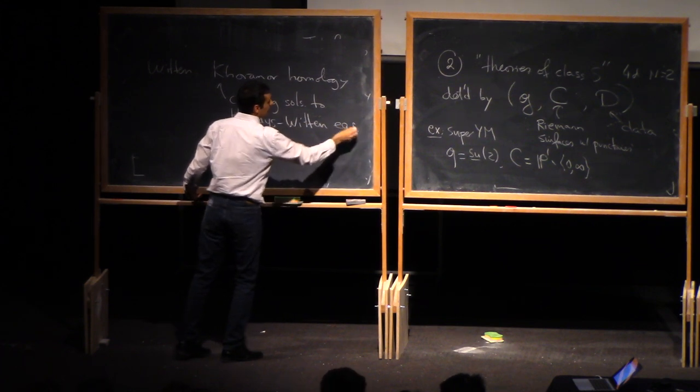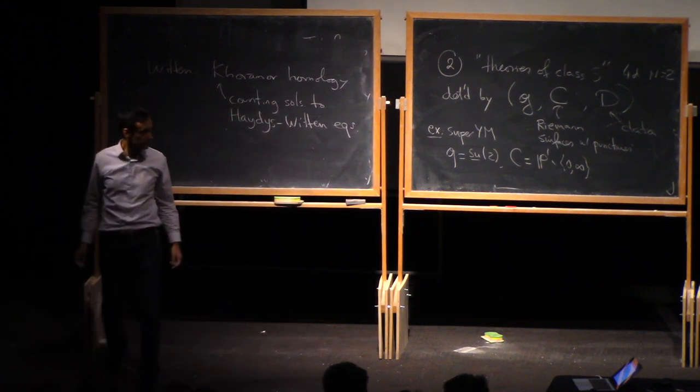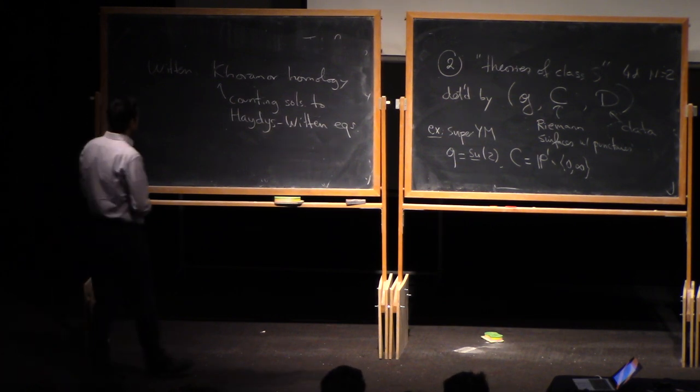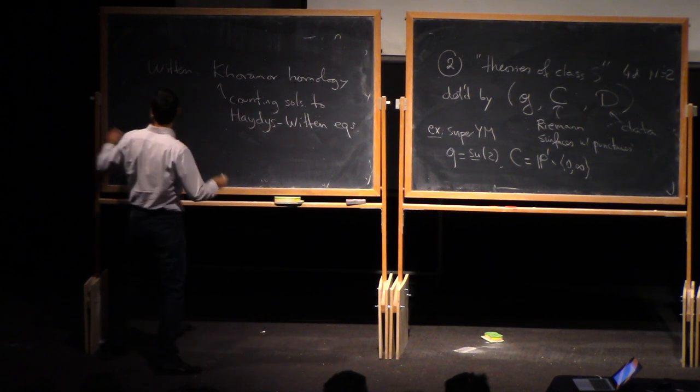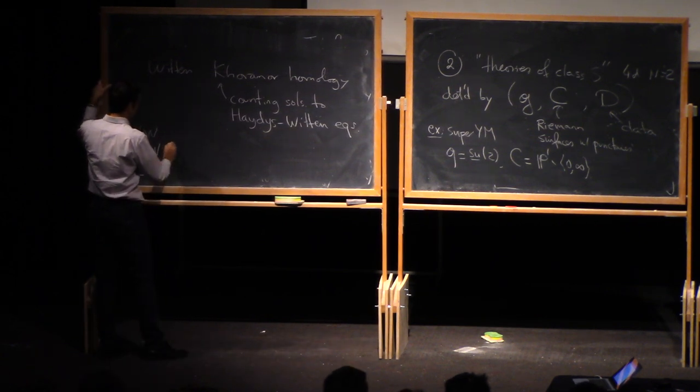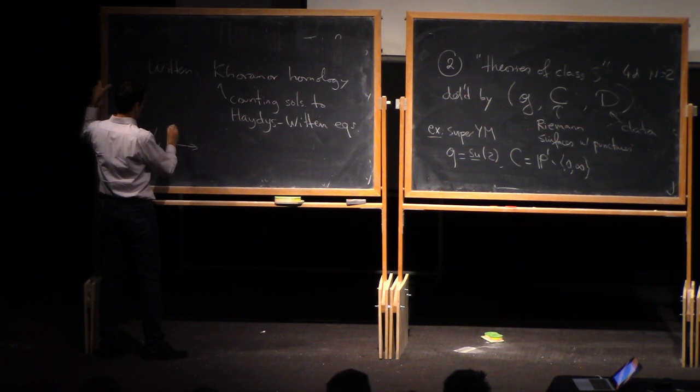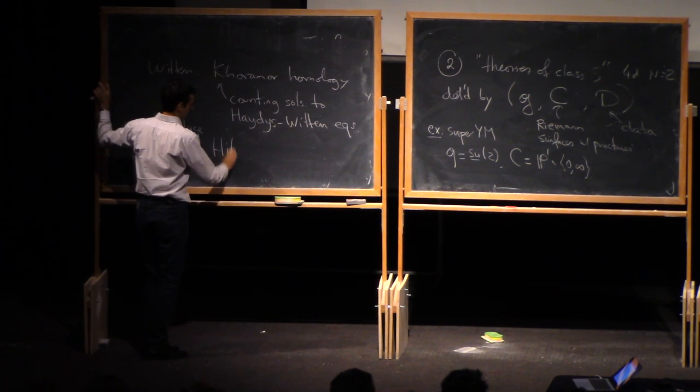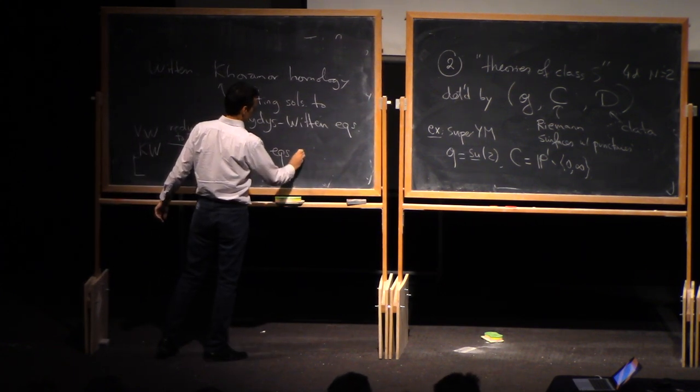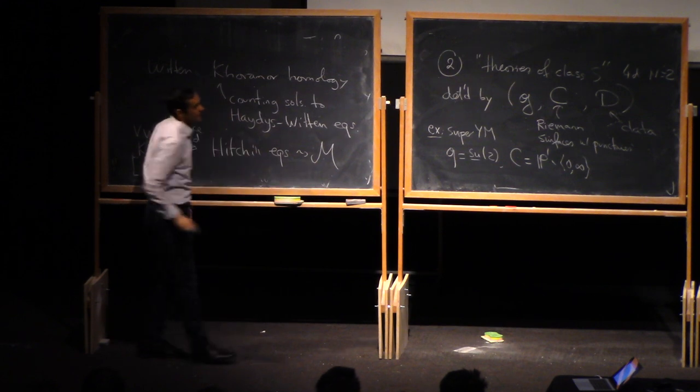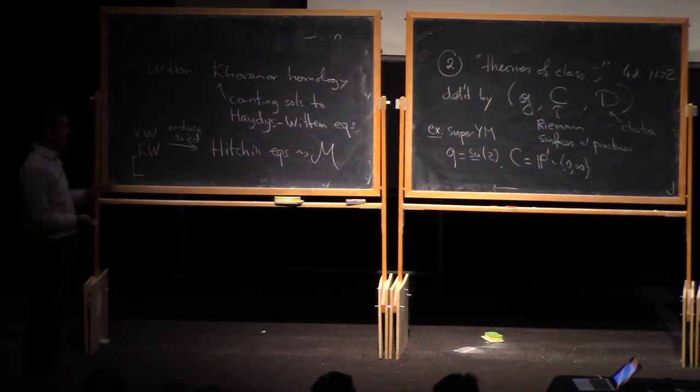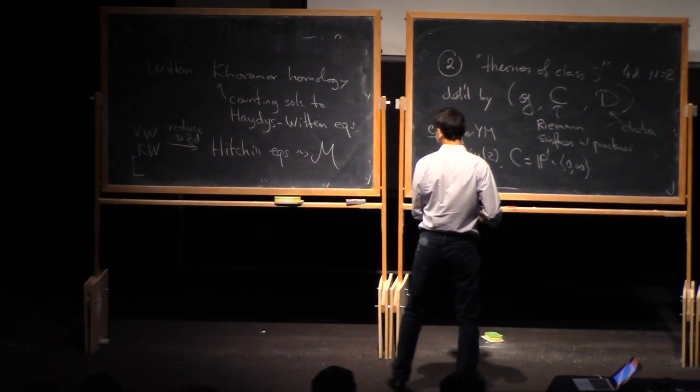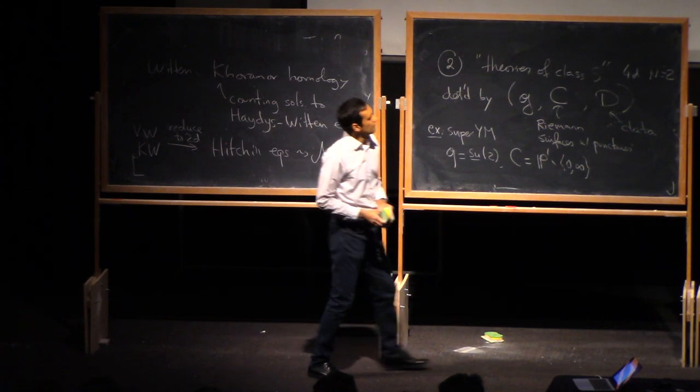Okay, which are a five-dimensional extension of, well, they're kind of like Kapustin-Witten, but one dimension higher. And, yes, one more thing. So these Vafa-Witten and Kapustin-Witten theories, if you reduce them to two dimensions, you get back the Hitchin equations. So the moduli space M also can be, yeah, you can also get to it like in this way, it's related to this kind of equations.